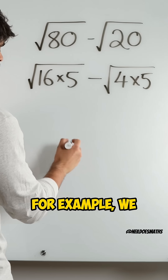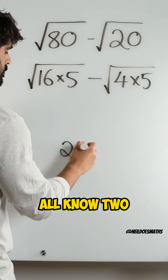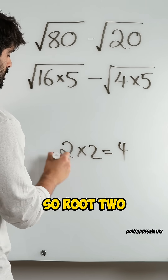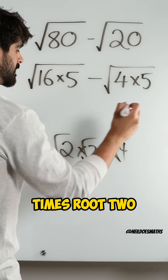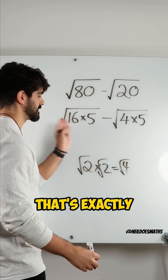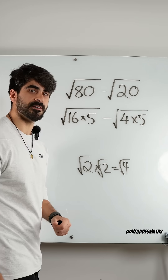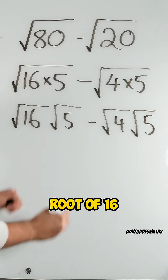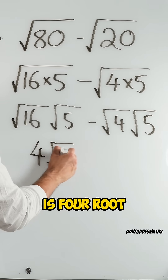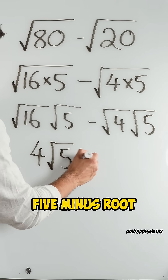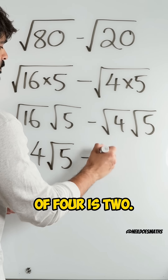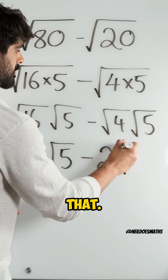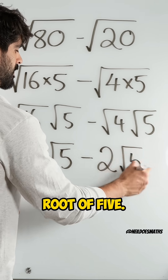For example, we all know 2 times 2 is 4, so root 2 times root 2 is root 4. That's exactly what I'm doing here, so they look like this. Root of 16 is 4, root of 4 is 2, root 5.